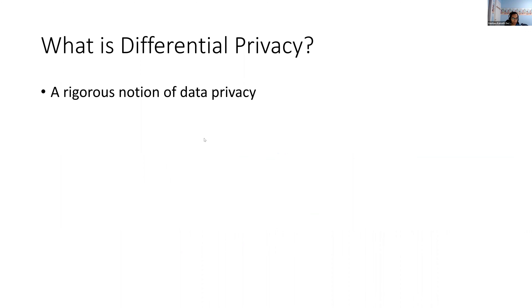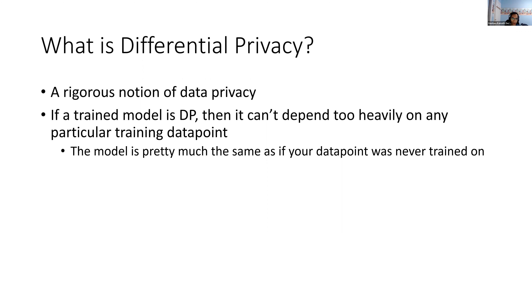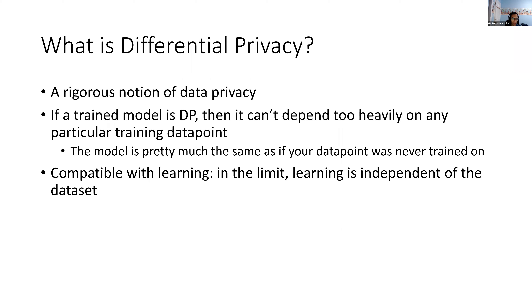Let me tell you some properties of differential privacy. If a trained model is differentially private, this implies it can't depend too heavily on any particular training data point — which is crucial to this type of non-memorization property we're looking for, among other things. It prevents against this type of memorization but also a lot of other attacks, so it's more general than that specific privacy violation I mentioned. Intuitively, the model is pretty much the same as if your data point was never trained on. This is actually compatible with learning — if you have infinite amounts of data, learning should be independent of any individual data point. The problem comes up with finite amounts of data.